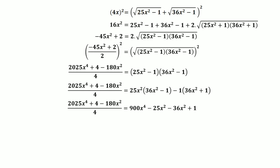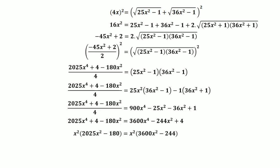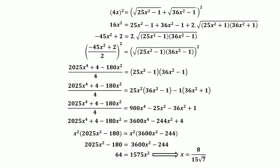Multiplying both sides by 4 gives: 2025x⁴ + 4 − 180x² = 3600x⁴ − 2244x² + 4. Subtracting 4 from both sides and factoring out x², then dividing by x² yields: 2025x² − 180 = 3600x² − 2244. Solving: 64 = 1575x², so x² = 64/1575, giving x = 8/(15√7).